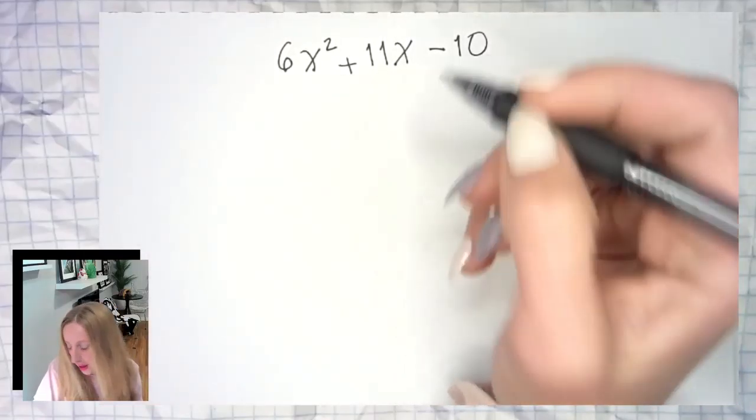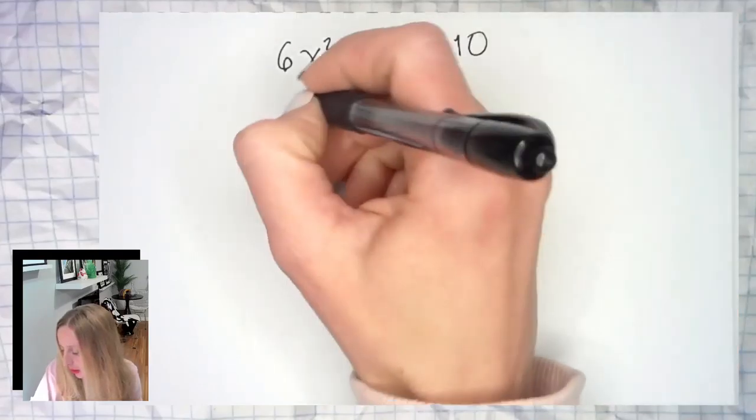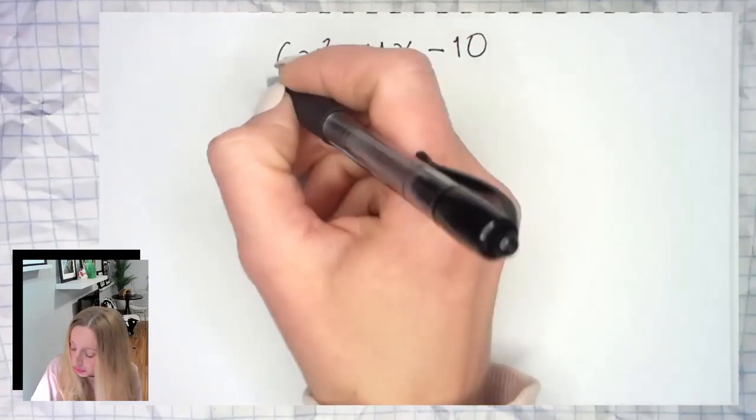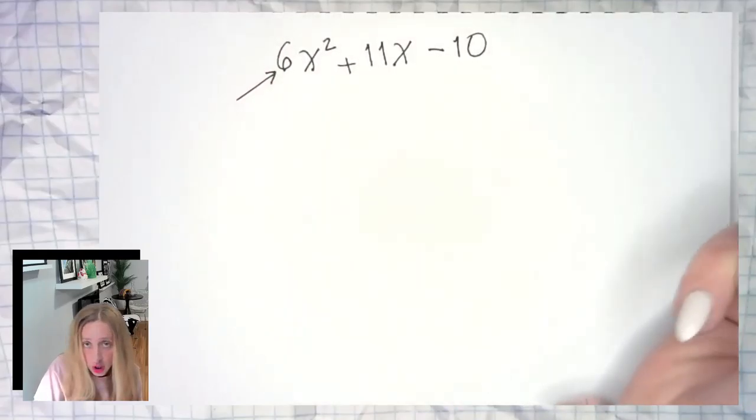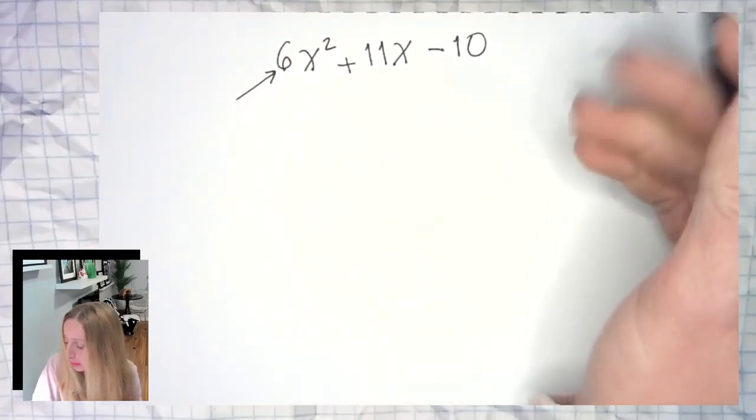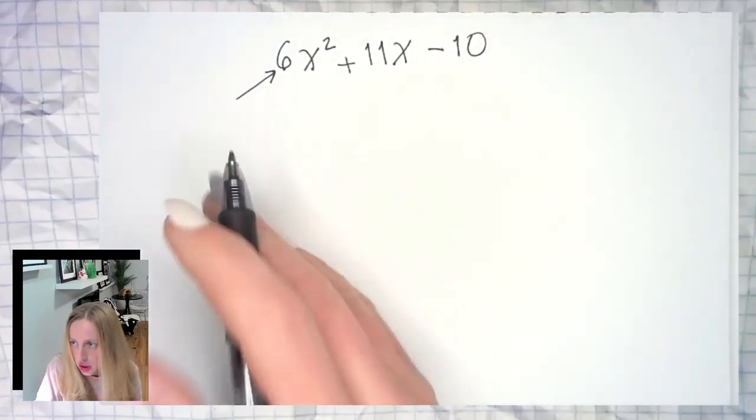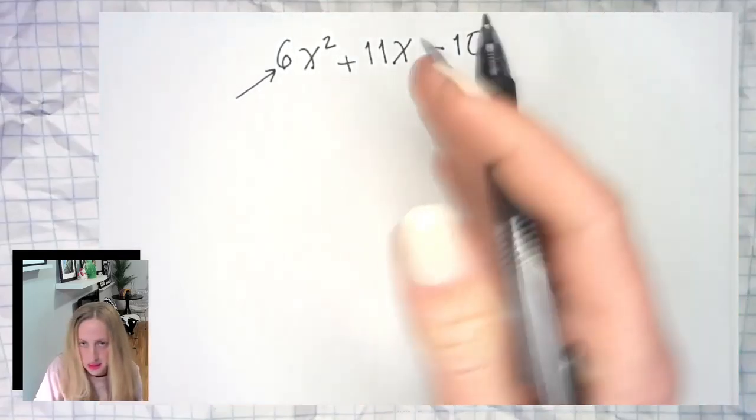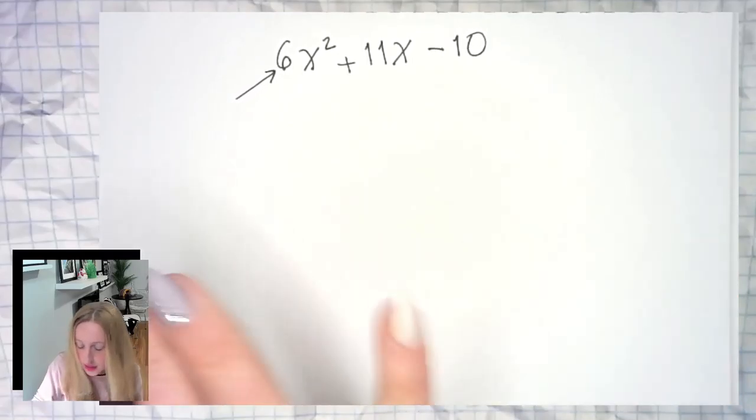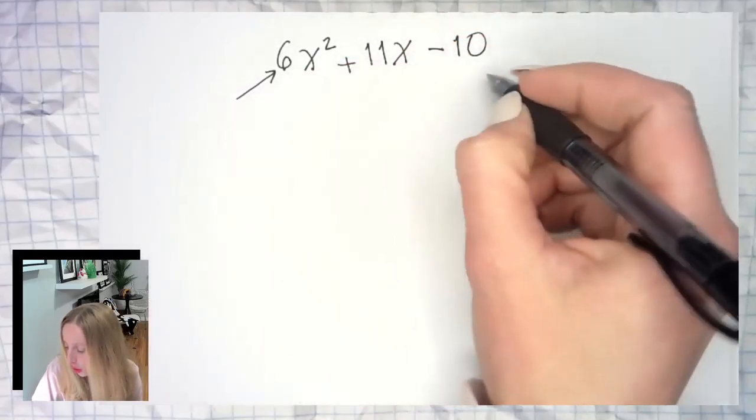So when you are factoring something like this, and what do I mean something like this? I mean a quadratic trinomial where your a, your leading coefficient, is not equal to one. Too many people are still trying to do it the way you would do if it were one. You can't just jump in and put x times x and then stick the numbers in and call it a day. It's not going to work.